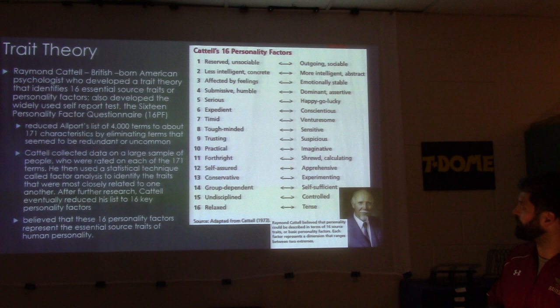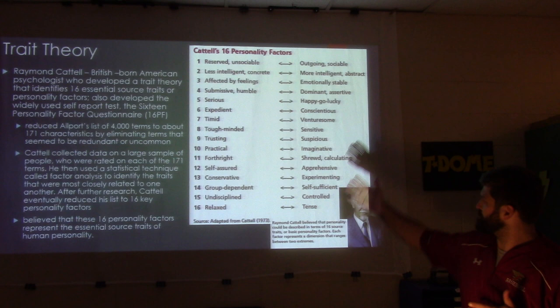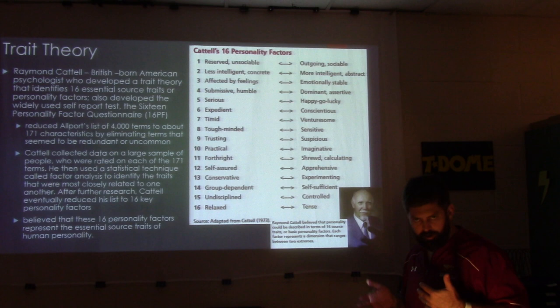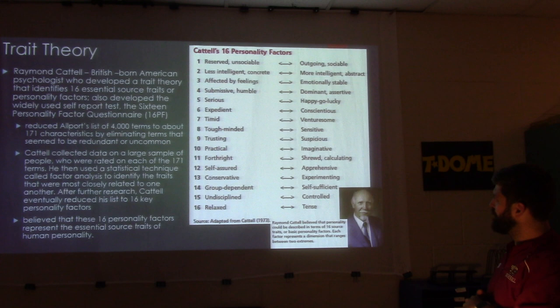These 16 factors are always measured between two poles. For example, factor five has 'serious' on one end and 'happy-go-lucky' on the other, and when you take the test, you find out where you lie between those two extremes.